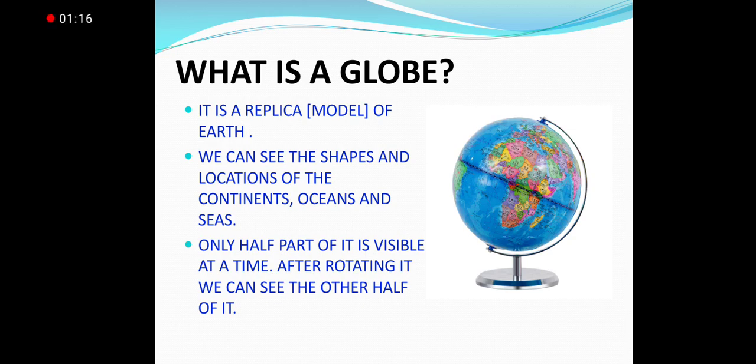In the modern era, satellite images of the earth also proved that the shape of the earth is like an orange or sphere. We can comprehend the shape of the earth with the help of a globe. Now, let us see what is a globe.